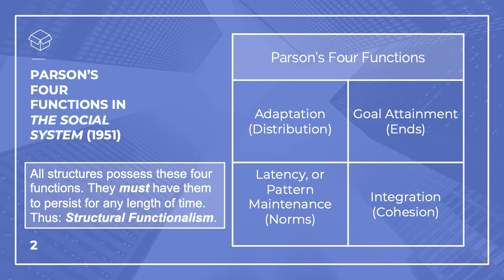An individual human organism meets these four requirements, as does a social system like Canadian society. A key Parsonian question: what coordinated components of action systems let them continue to exist? These are: 1. Adaptation, 2. Goal attainment, 3. Integration, and 4. Latency or pattern maintenance. On the slide, you'll see the A-G-I-L system that Parsons introduces in The Social System, published 1951.